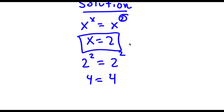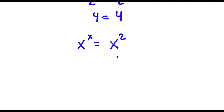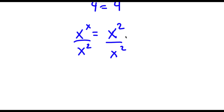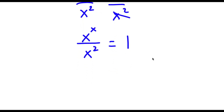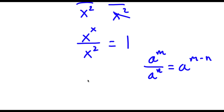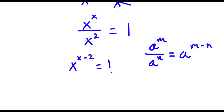To find all solutions, let's actually go ahead and solve this equation. Starting with x to the power of x equals x to the power of 2, I'm going to divide both sides by x to the power of 2. These cancel out, leaving x to the power of x over x to the power of 2 equals 1. Using the rule a to the power of m over a to the power of n equals a to the power of m minus n, this becomes x to the power of x minus 2, which equals 1.